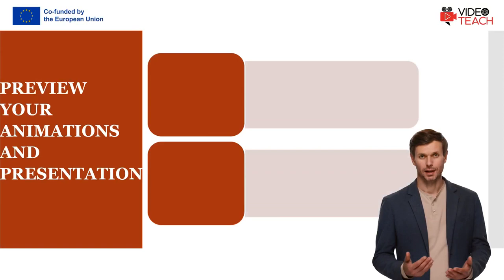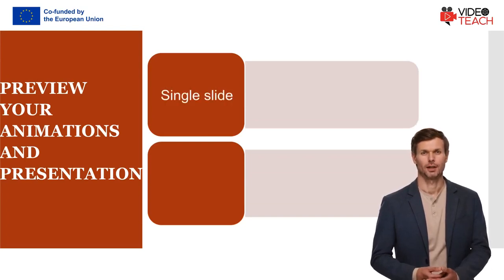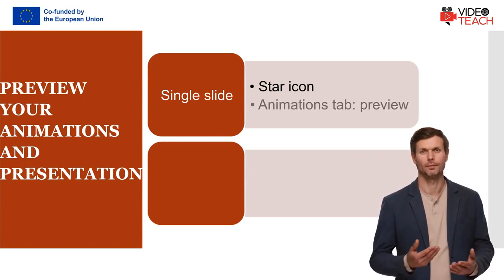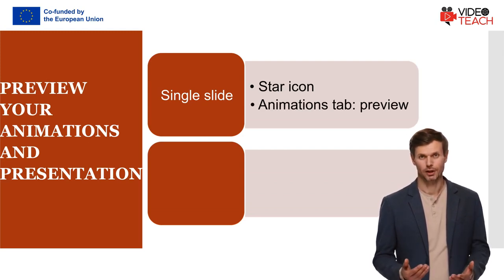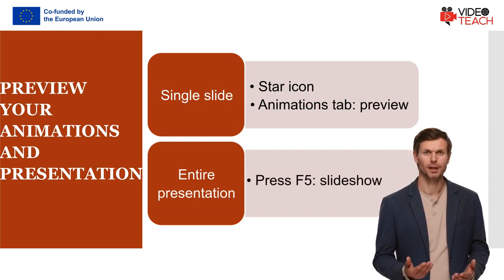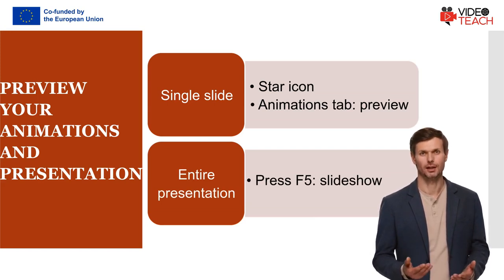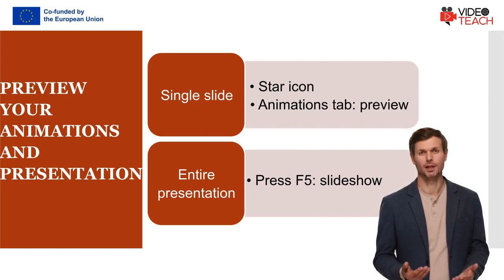As you work on your presentation and add animations, you should constantly check how they look. You'll notice that slides with animations have a little star next to them — if you click the star icon, the animations will start playing. Additionally, you can go to the Preview to view the animations on the selected slide. Once you've finished your presentation, press F5, watch the entire slideshow, and observe the animation pace.